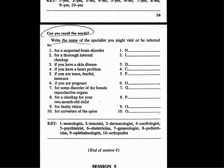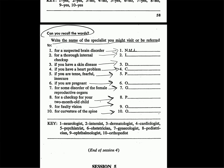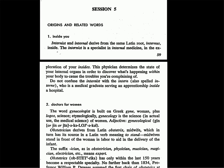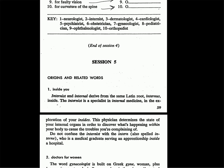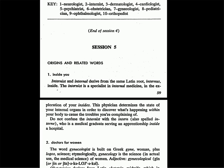Can you recall the words? Write the names of the specialists you might visit. For a suspected brain disorder — neurologist. For an internal checkup — internist. Skin disease — dermatologist. Heart problem — cardiologist. If you are tense, fearful, insecure — psychiatrist. If you are pregnant — obstetrician. Disorder of female reproductive systems — gynecologist. Checkup of your two-month-old child — pediatrician. Vision problems — ophthalmologist. Curvature of the spine — orthopedist. End of session 4. I'll begin session 5 in the next video.